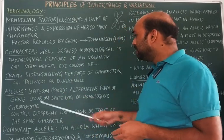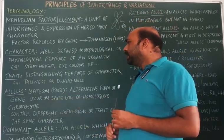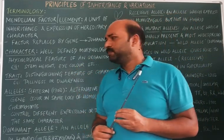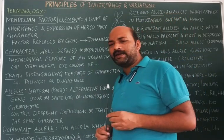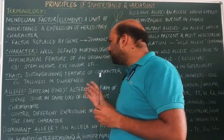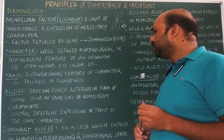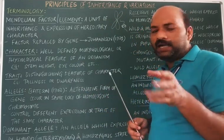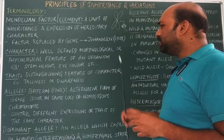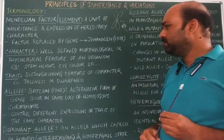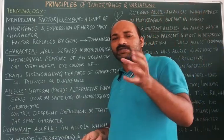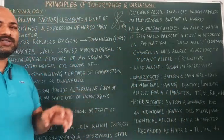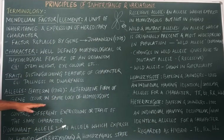Next is allele, also called allelomorph. The word 'allele' was coined by Bateson in 1902. An allele is an alternative form of a gene which occurs at a particular locus on a homologous chromosome.